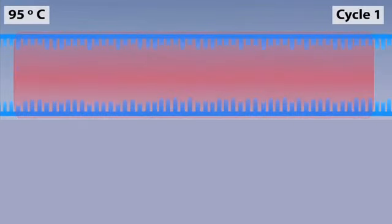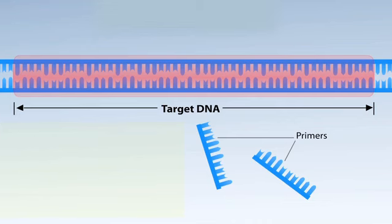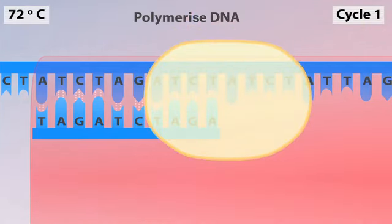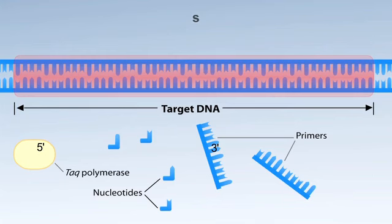The temperature is lowered to about 60 degrees Celsius to allow the primers to anneal. The temperature is then raised to 72 degrees Celsius, the optimal temperature for this type of polymerase, which adds nucleotides to the 3' end of the primer.